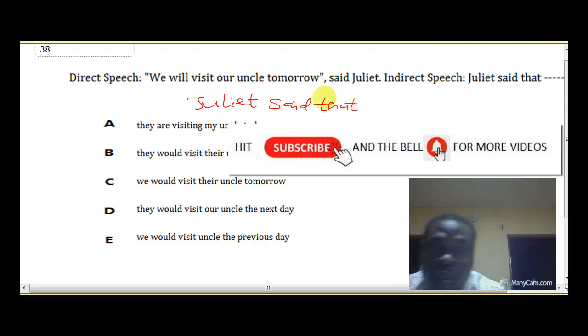And look at we, we will. We will. Will here, we change to they. Okay, then would. Will, will, will change to would because you are reporting, that is already a past statement. Okay, so you have to use the past tense form of will. Juliet said that they would visit.